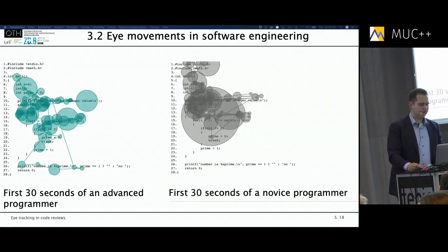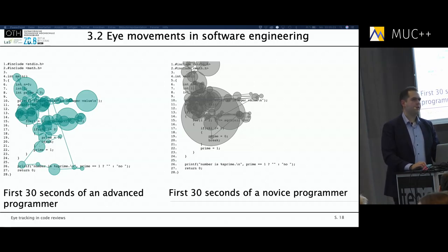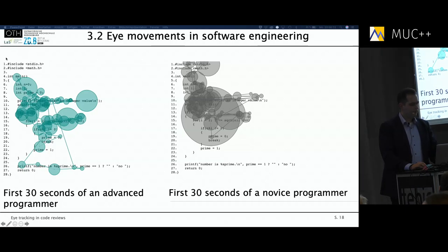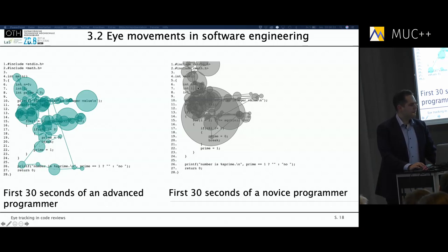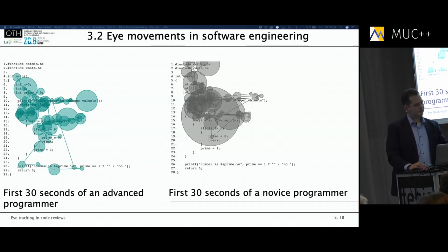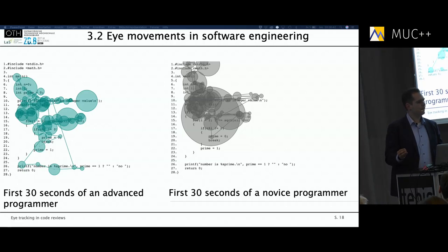Regarding the eye movements, you can see the first 30 seconds of an advanced programmer compared to a novice. The advanced programmer skips the top of the code — in C examples the includes are always there and there isn't much information — just skipping to get an overview, and within 30 seconds is able to almost cover the whole code. In contrast, the novice reads it like natural text: starting at the top, reading left to right, proceeding through the code. If you ask novices about their strategy, they just say 'yeah, I read it — like a novel.'